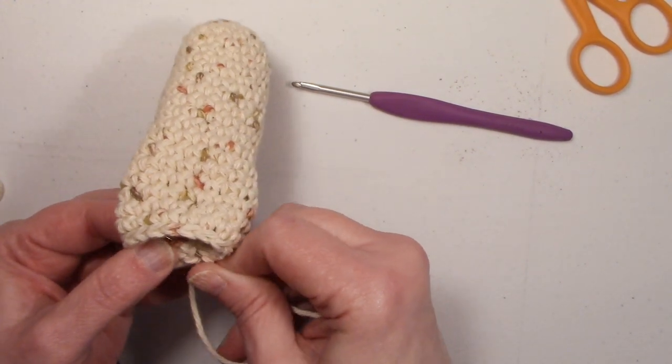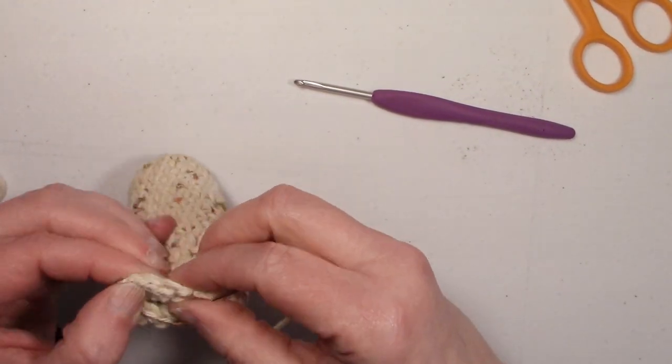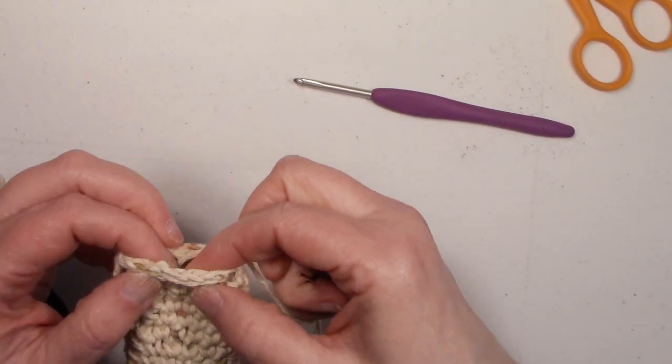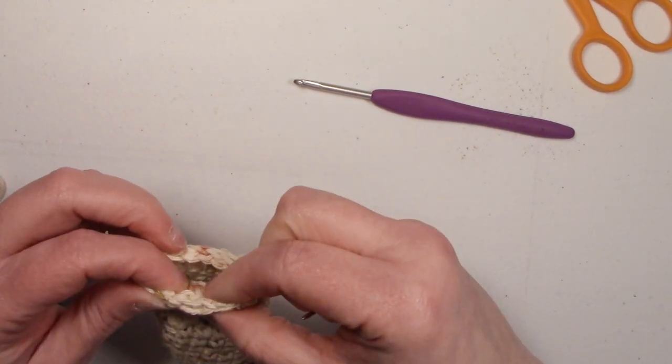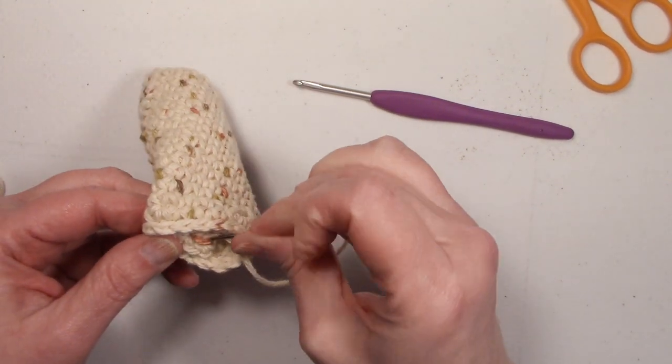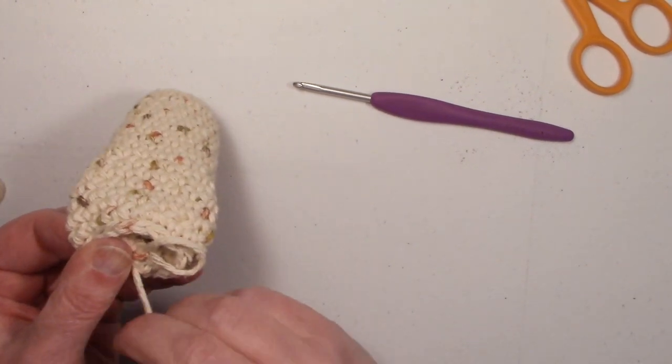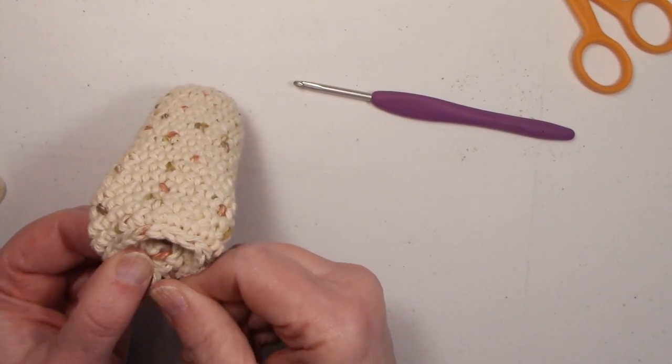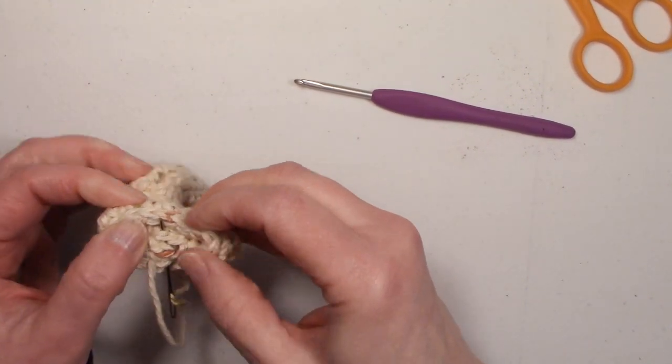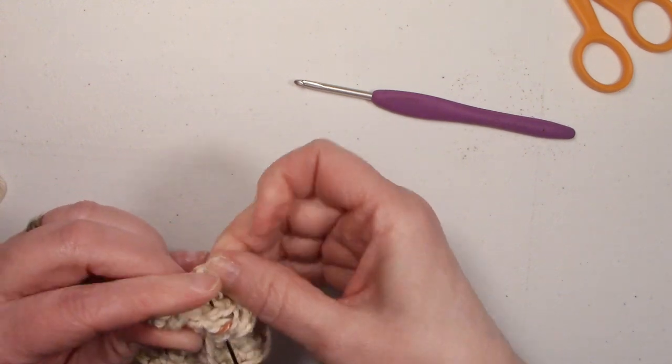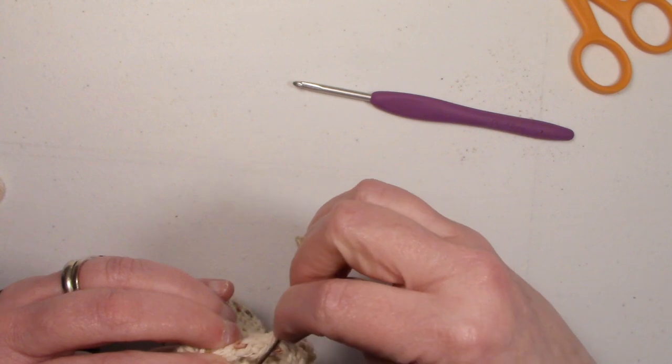And weave your yarn under a few stitches on the inside to lock it into place. Don't want to pull it too tight, because you want to make sure it still looks like another stitch. I know it's a little tight quarters in there. But you want to make sure you get it under a couple of different fibers, and weave it back and forth a few times, so it doesn't pull back out. Because that would definitely unravel your entire project.